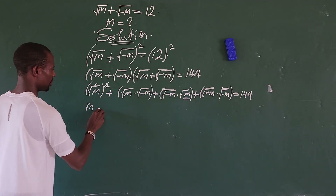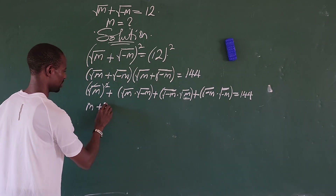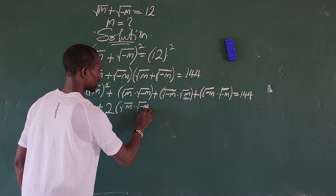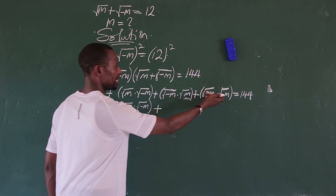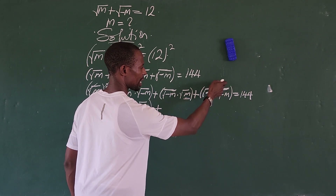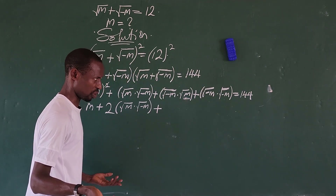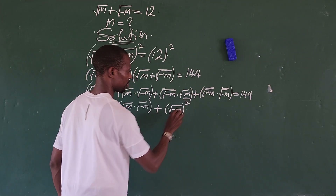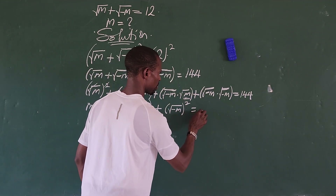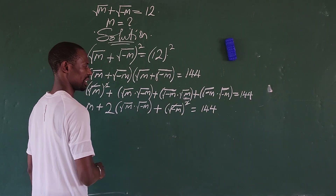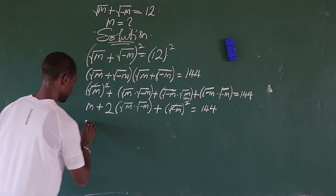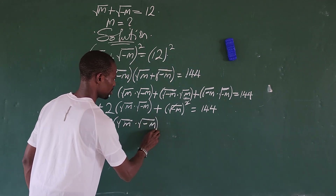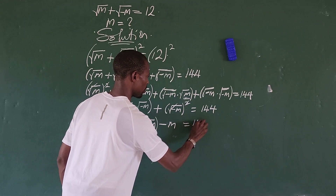So we get m, then plus 2 times bracket square root of m times square root of minus m, close bracket. The two middle cross-product terms are the same, so they combine. The last term, square root of minus m all to the power of 2, gives minus m. So we have m plus 2 times square root of m times square root of minus m, minus m, equals 144. The m and minus m cancel out.